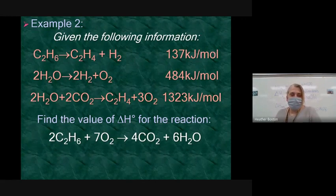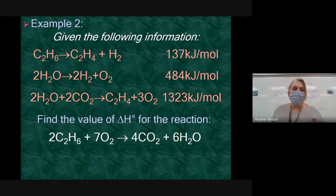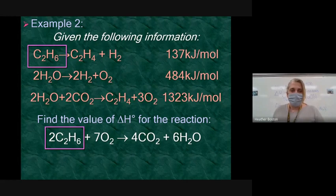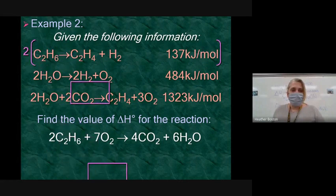So here's my givens. Let's label the equations one, two, and three. Then let's go down to our target equation, which we're asked to find the value for enthalpy. That little circle up there, see how it says change in H with that little degree sign up there? That stands for standard. Anytime you see that circle up there, that means standard, meaning that it's looked up in a reference material. So the first thing I need to do is find C2H6 in the reactant side.